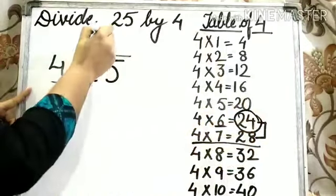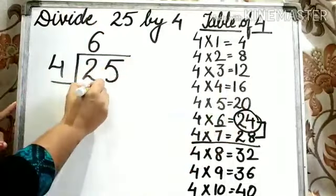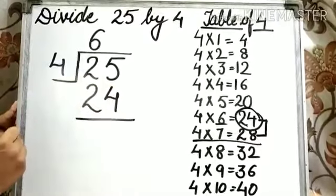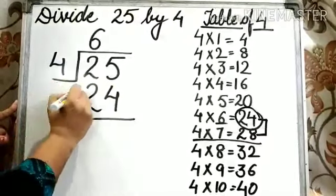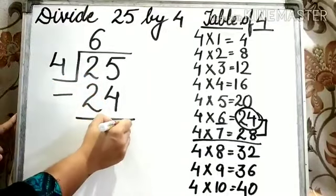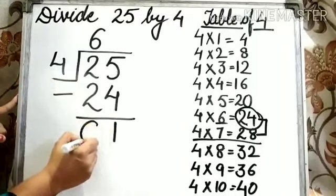Write 6 in the quotient and 24 under the dividend. Now, what we need to do? We need to subtract here. 5 minus 4 is equal to 1 and 2 minus 2 is equal to 0.